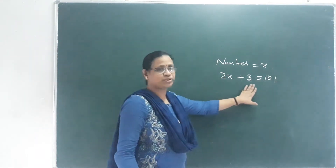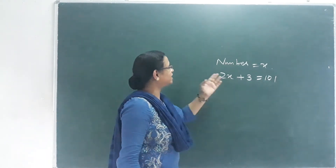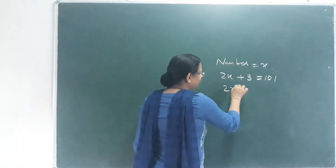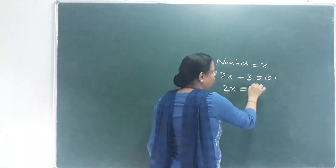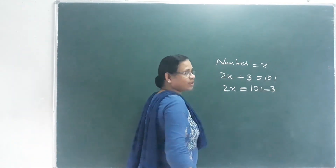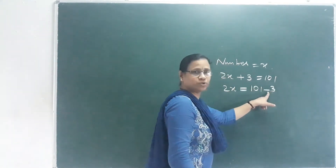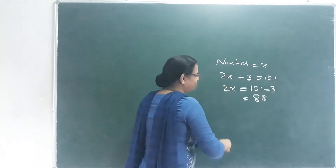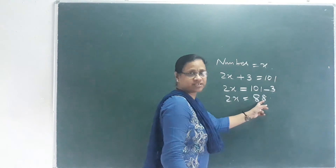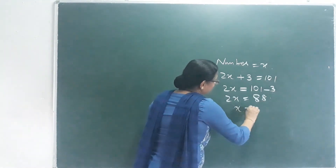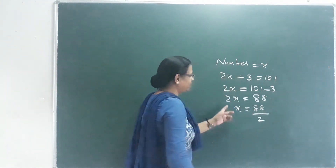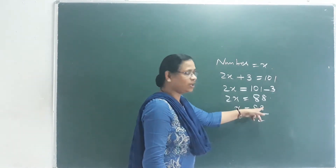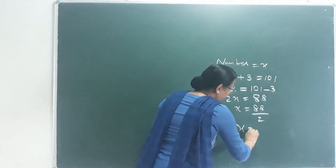We form the equation: 2x plus 3 equals 101. So 2x equals 101 minus 3, which is 98. Then x equals 98 by 2, which equals 49.